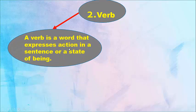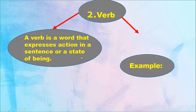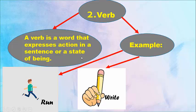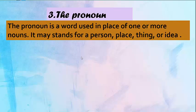Secondly, verb. A verb is a word that expresses action in a sentence or a state of being. Examples: run, write, jump.